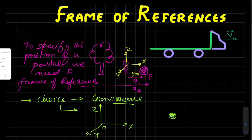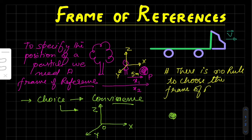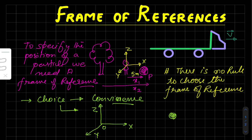From our frame of reference we are saying that my friend's home is 500 meters away. There are a few more things we need to know about the frame of reference. One thing is there is no rule to choose the frame of reference — keep in mind, there is no rule. We can choose the frame of reference according to our convenience. Whether we are at rest or in motion, we can consider ourselves as the frame of reference. So wherever you feel comfortable, you can choose that position as the frame of reference.